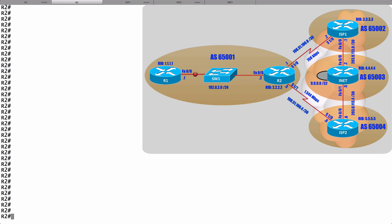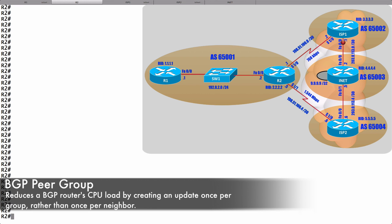However, we might have a similar set of parameters configured for multiple neighbors. We might have the same IP prefix list configured for this neighbor and this neighbor and this other neighbor. Instead of using CPU resources to determine which routes we should be filtering from a neighbor or routes going to a neighbor, what if we said this select group of neighbors are all going to use the same set of filters? We can create something called a BGP peer group and apply our filtering commands to the peer group as opposed to each individual neighbor.